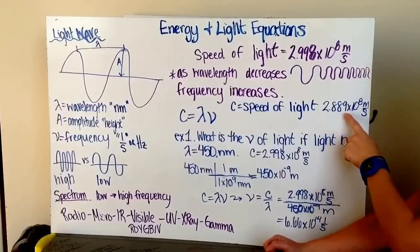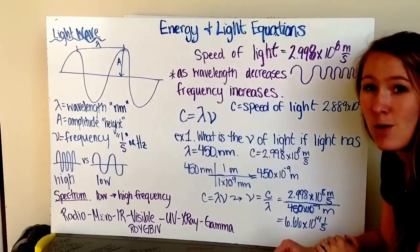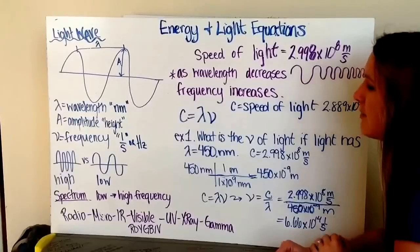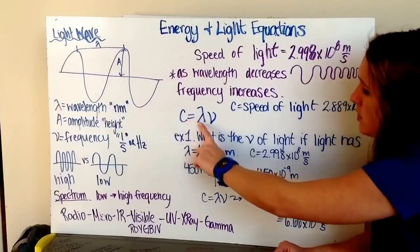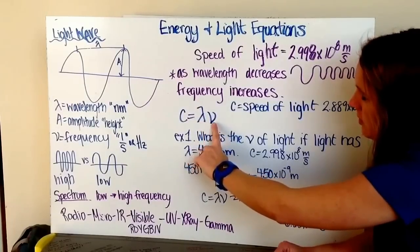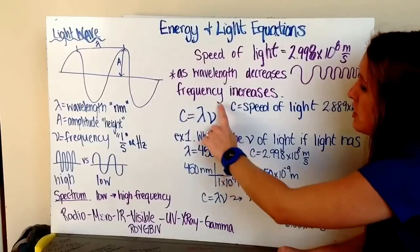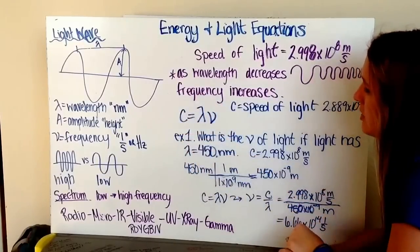Again, 2.998 times 10 to the eighth meters per second. We can now write an equation for the speed of light. Speed of light is equal to wavelength times frequency, or lambda times nu. To do light equations, we just use our equation here for light.